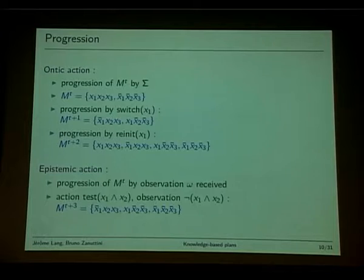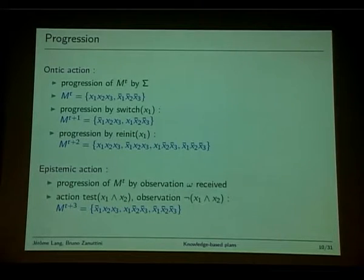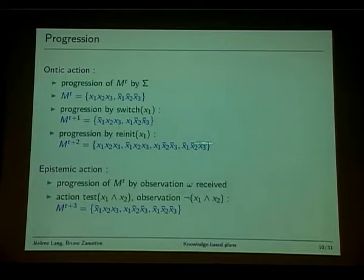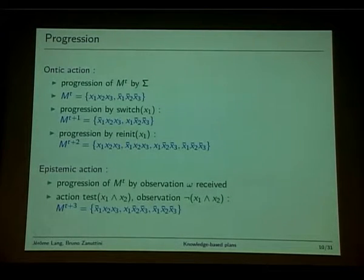Suppose we then perform the epistemic action 'test x1 and x2' and receive the observation 'not x1 and x2.' We filter the set of states by removing all states that do not satisfy 'not x1 and x2,' and we are left with three possible states.